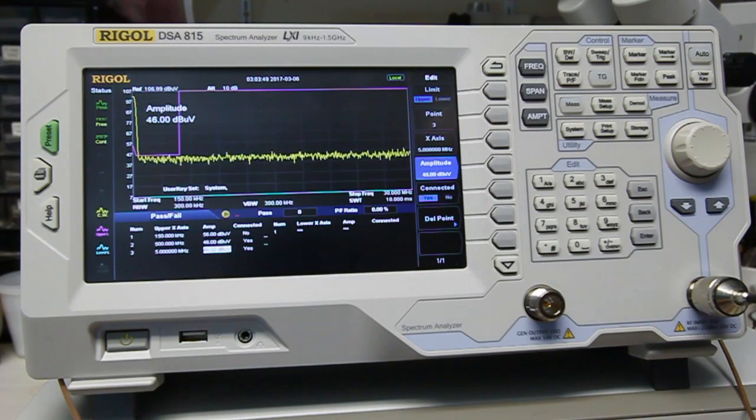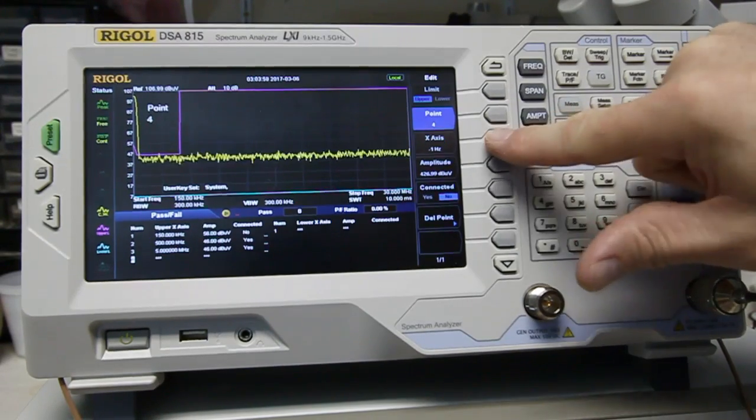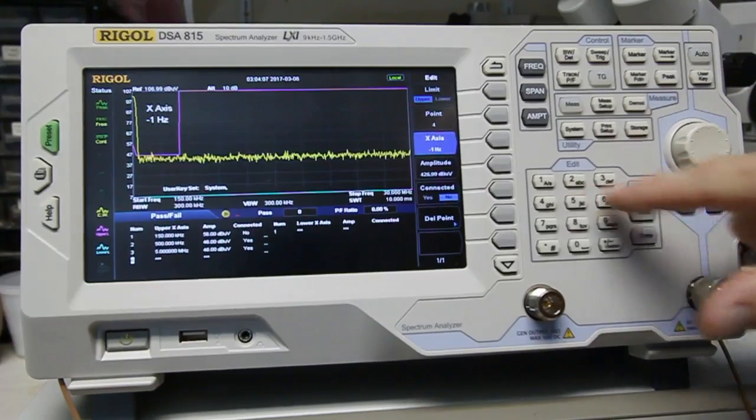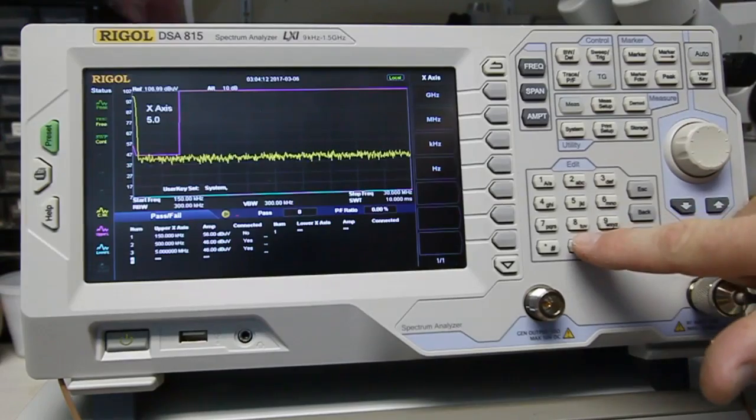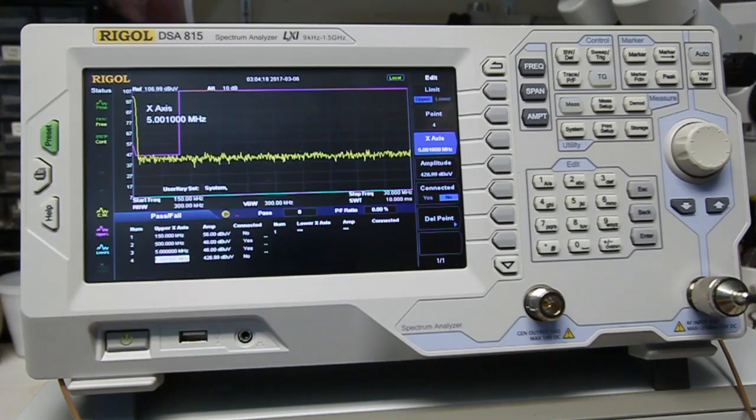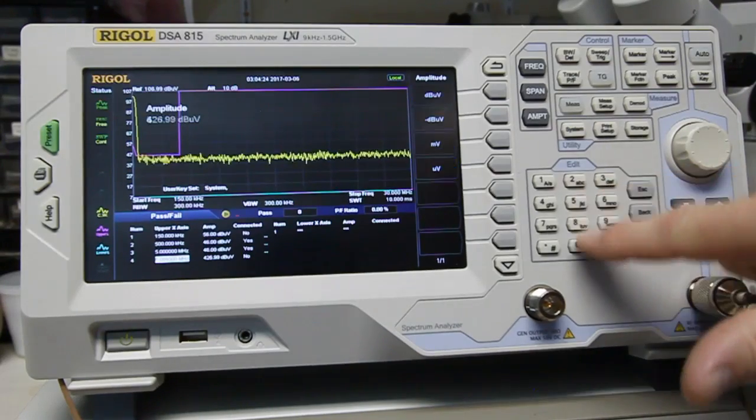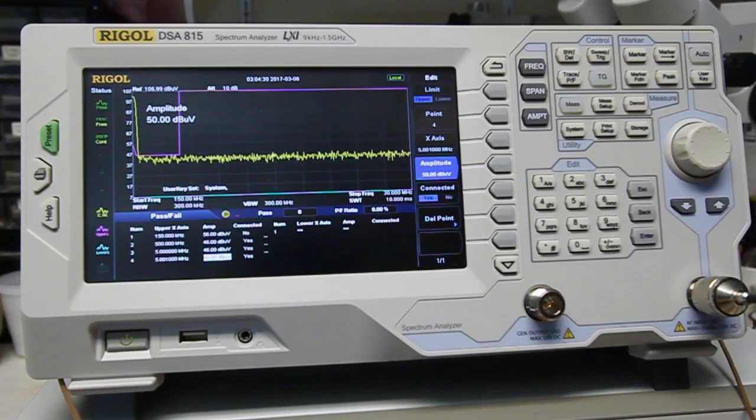At the five megahertz it needs to go back up to 50 decibels. So we're going to add another point. And we're going to specify. I can't exactly put in the exact frequency of the previous point. So I'm going to put in something that's very close to five megahertz. 5.001 should work, megahertz. Amplitude. This is the 50 decibels. And we want it connected, yes.